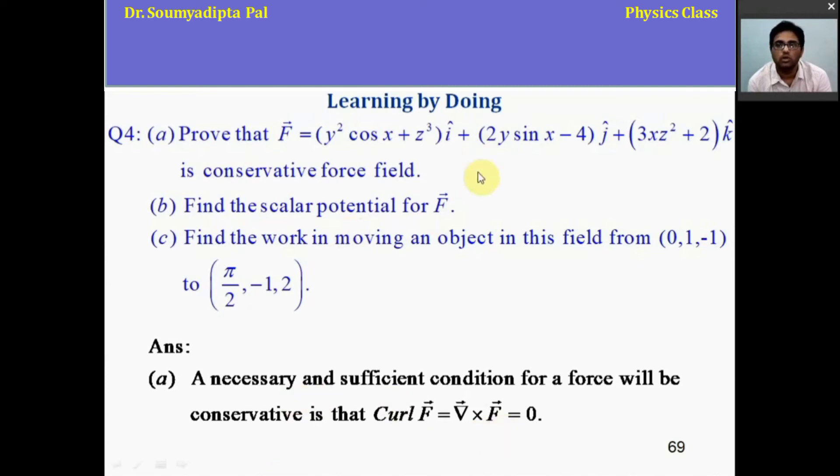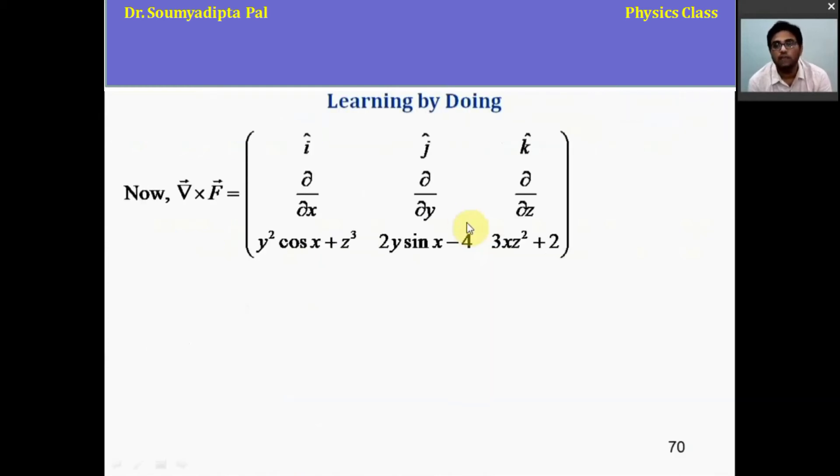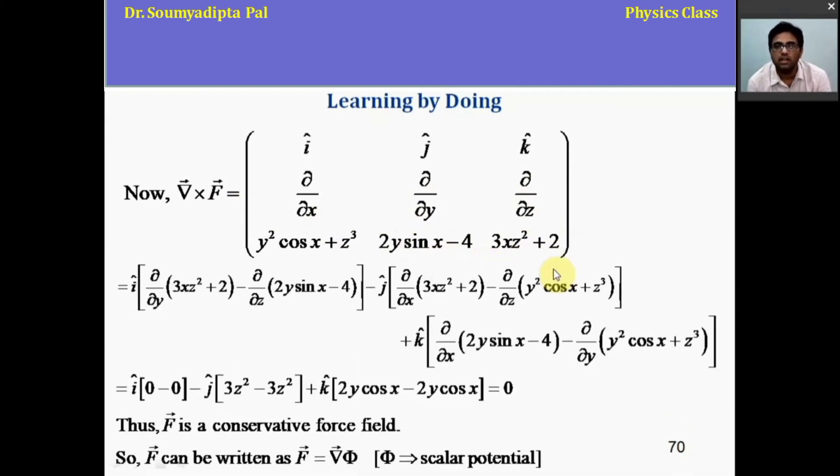So let's verify that whether the force field is conservative or not. For that, first we have to write the form of curl A and that is like this. So it is similar to vector A cross B. And instead of A vector here, we have del operator. And these are different components of A vector. Now, if we do the operation of partial derivatives, then we get this form. And we get the value of curl F is 0. Thus, we can tell the given force field is conservative in nature.